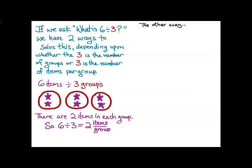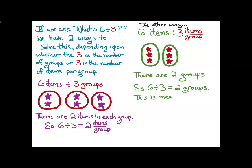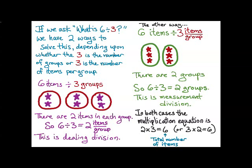And the other way to do this is to take 6 items and divide by 3 items per group. And so here I put 3 items in the first group and 3 items in the second group. And I can see that there are 2 groups. So 6 divided by 3 in this case is 2 groups. This is measurement division and the first one that I did was the dealing division. And in both cases, the corresponding multiplication equation is 2 times 3 equal to 6, or if you prefer, 3 times 2 equals 6 where 6 is the total number of items. I haven't labeled the 2's and 3's in these equations because they're different in the two different types of division.